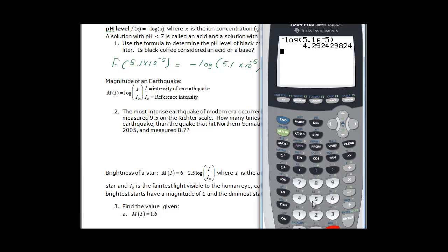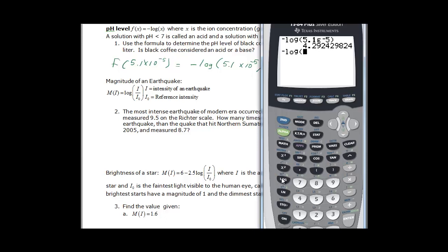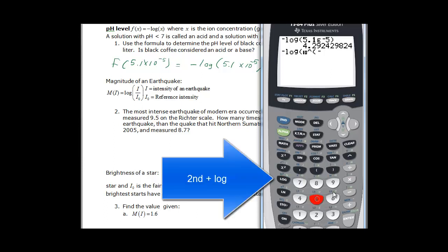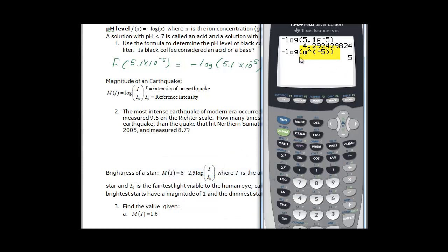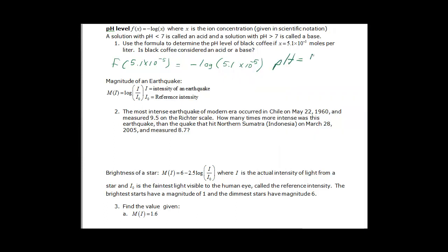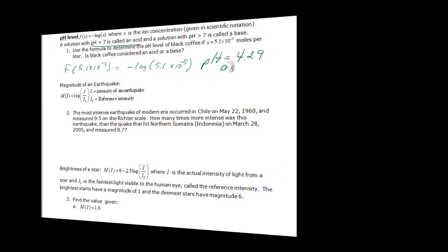The other way to do it is negative log, and then the inverse of a log is base 10. So you could do second log, and that will give you 10 to the caret, and you just put in your exponent. You just need a double set of parenthesis here and press enter. I forgot my 5.1, but that's the way you would write the 10 to the negative 5. So the pH is equal to 4.29, which is less than 7, so we have an acid.